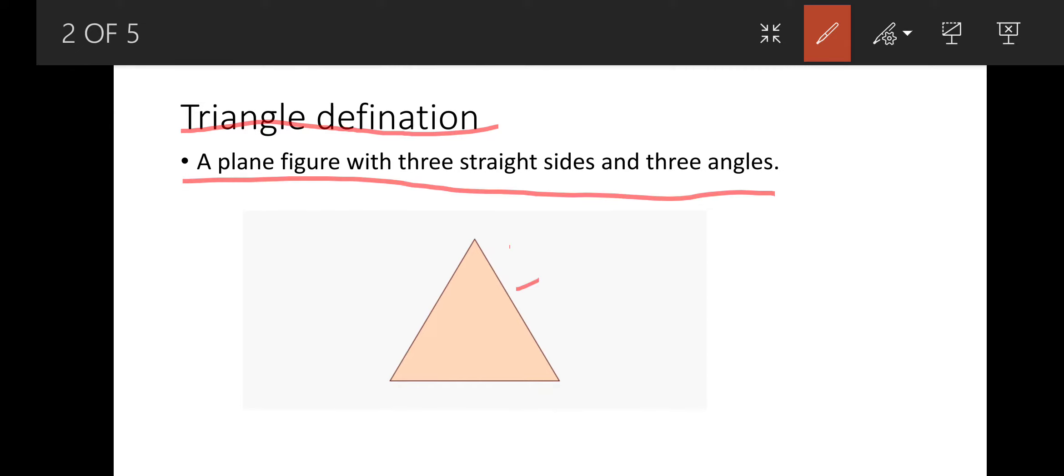So first side, second side, and third side. So three sides and three angles is called a triangle.